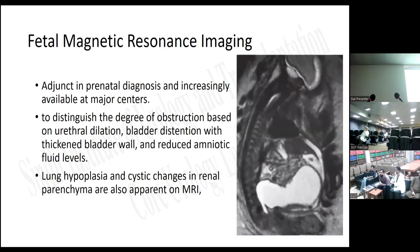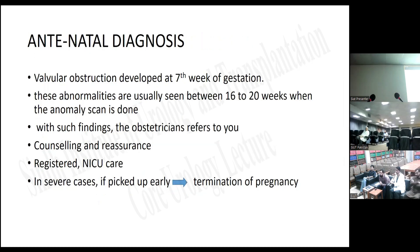Fetal MRI is an adjuvant in prenatal diagnosis, increasingly available at major centers. It distinguishes the degree of obstruction based on urethral dilation, bladder distension with thickened bladder wall, and reduced amniotic fluid levels. Lung hypoplasia and cystic changes in renal parenchyma are also apparent on MRI. These abnormalities are usually seen between 16 to 20 weeks when the anomaly scan is done.